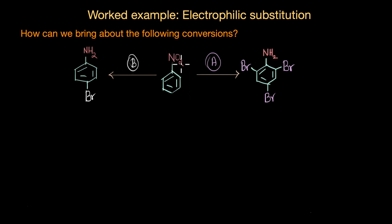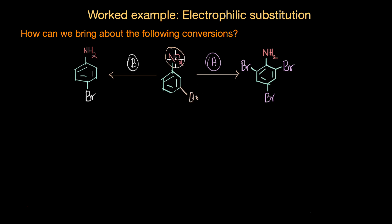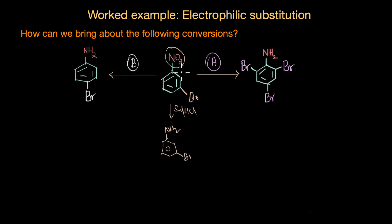Let's see what happens if we first perform bromination on nitrobenzene and then carry out reduction. We know NO2 is a strong electron-withdrawing, strongly deactivating group, so it directs the incoming electrophile Br⁺ to the meta position. We would get meta-bromonitrobenzene, and on reduction using Sn/HCl or Fe/HCl, we get meta-bromoaniline. But this is not the product we want — we need poly-bromination or para-substitution, not meta.